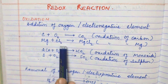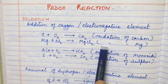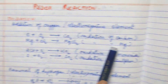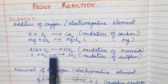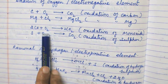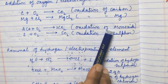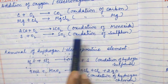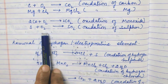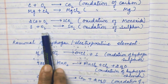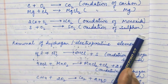Here Mg is attached to chlorine, so oxidation takes place. Here carbon monoxide reacts with O2, so oxidation of carbon monoxide takes place. Here sulfur reacts with O2, so oxidation of sulfur takes place.